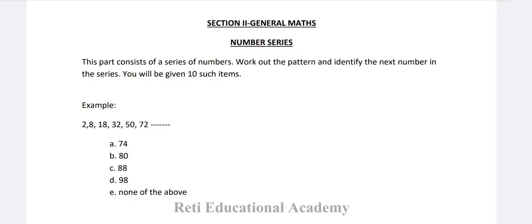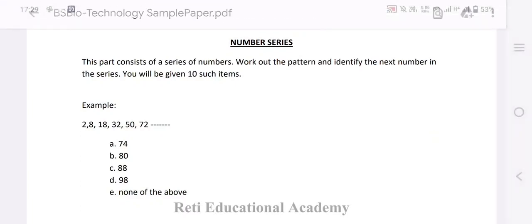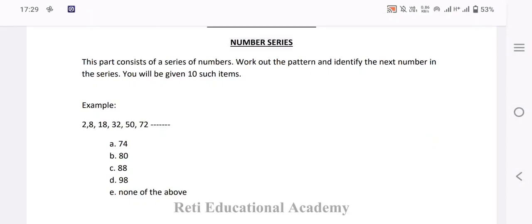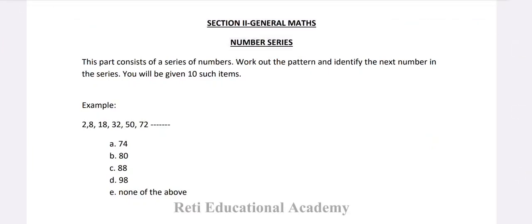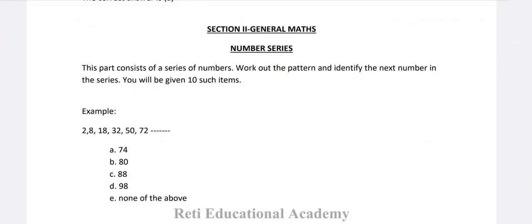Example: 2, 8, 18, 32, 50, 72. Follow the pattern and find the answer. Options: A) 74, B) 80, C) 88, D) 98. The right option in this is D.